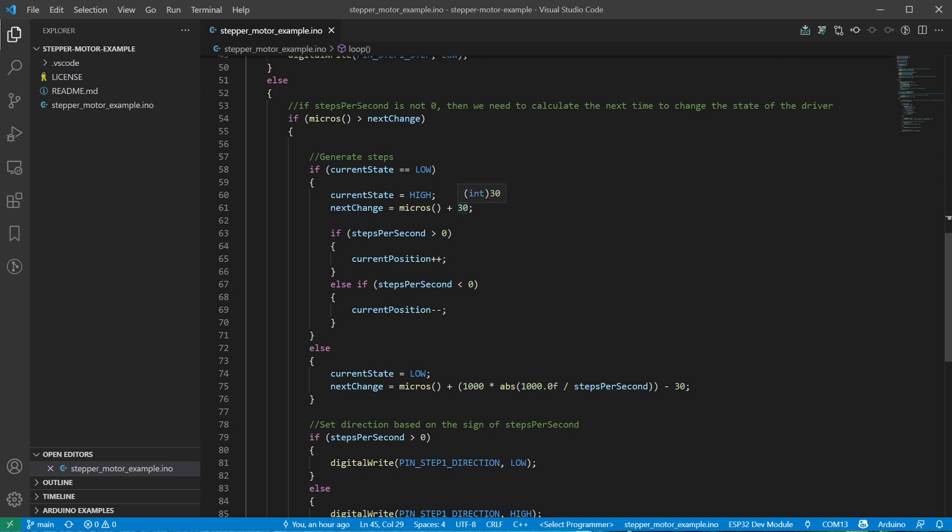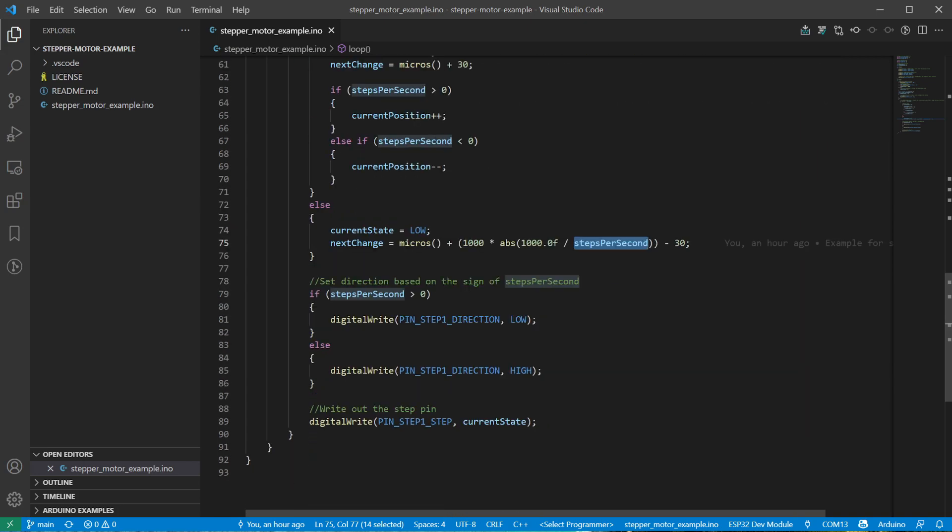And then wait for another cycle defined by the requested steps per second. So for example one thousand steps per second means that we do the change of the state of the pin every one millisecond. And finally depending on the speed positive or negative, we pull the direction pin low or high and write the current state to the pin. And this works like that.